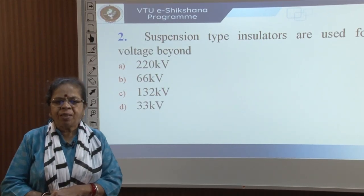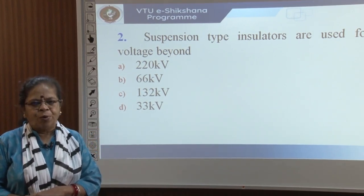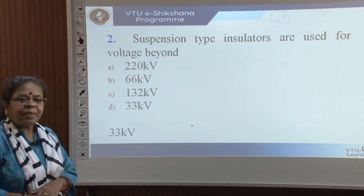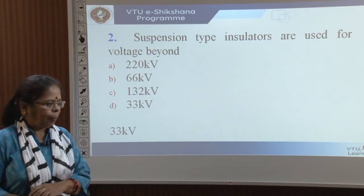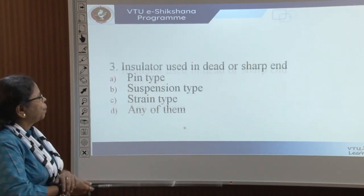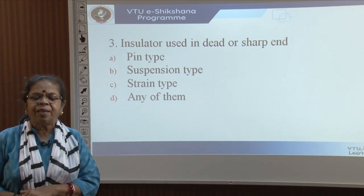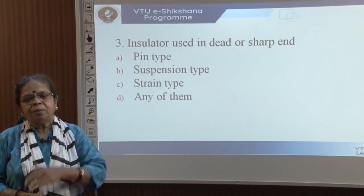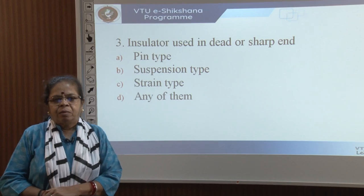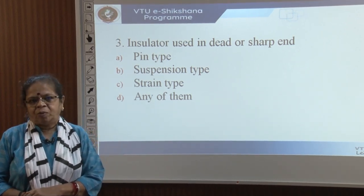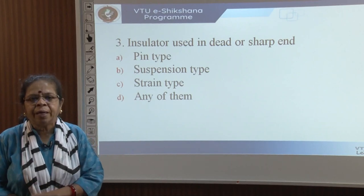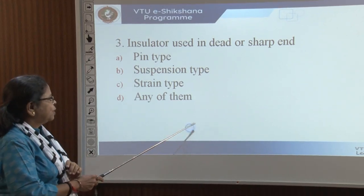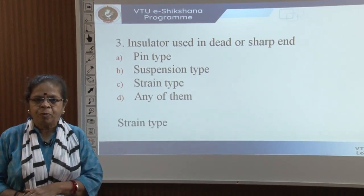Quiz: Suspension type insulators are normally used for 33 kV and above. Insulators used at dead ends or sharp bends such as river crossings experience high mechanical strain — these are called strain type insulators.